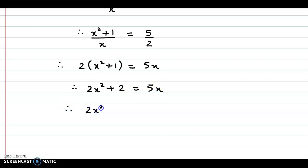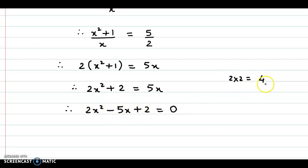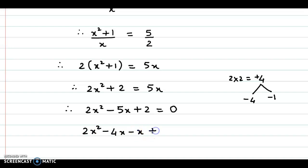Rearranging the terms, we get 2X square minus 5X plus 2 is equal to 0. Now 2 into 2 is 4. We need minus 5 for the middle term, so the two factors will be minus 4 and minus 1. So let us split the middle term: we have 2X square minus 4X minus X plus 2 is equal to 0.